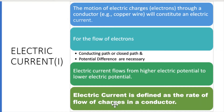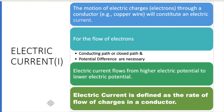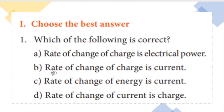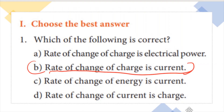Consider this multiple choice question: which one of the following is correct? Rate of change of charge is electric power; rate of change of charge is current; rate of change of energy is current; rate of change of current is charge. The answer options repeat the words charge and current, but we know that electric current is the rate of flow of charges. So the correct answer is: rate of change of charge is known as electric current.